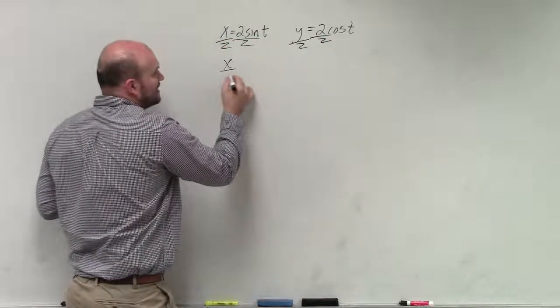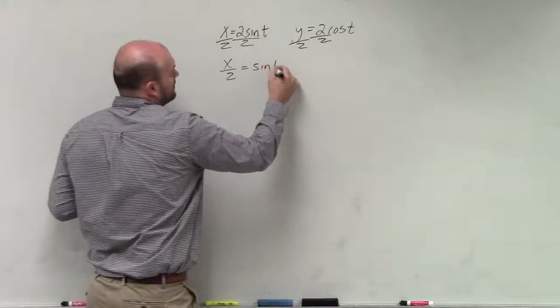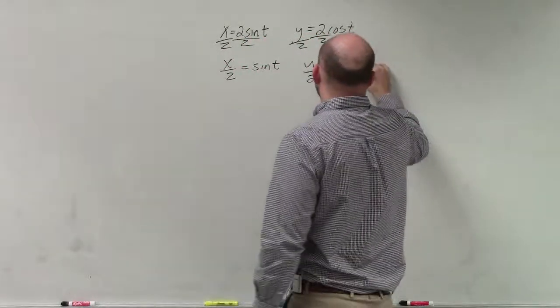So therefore, we have x over y is equal to sine of t, and y over 2 is equal to cosine of t.